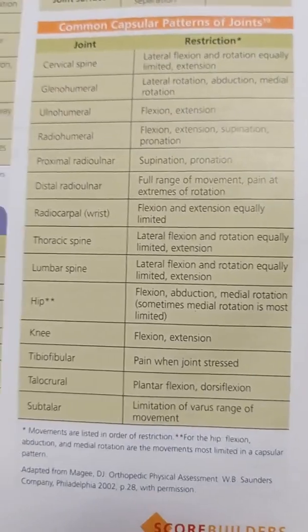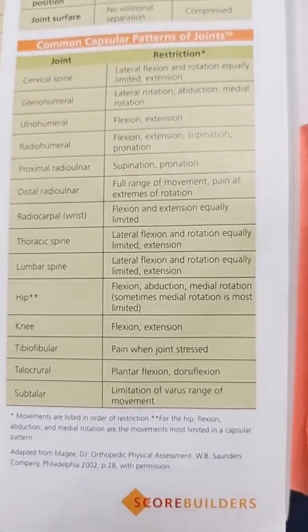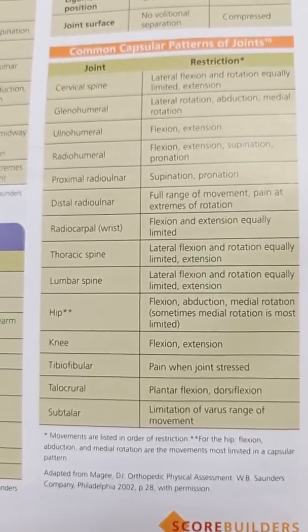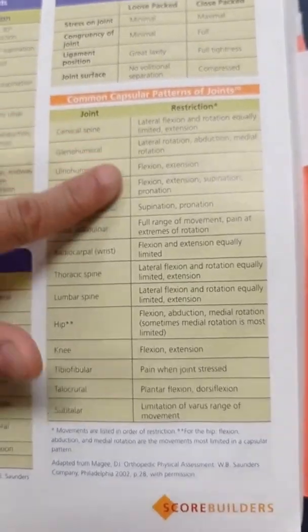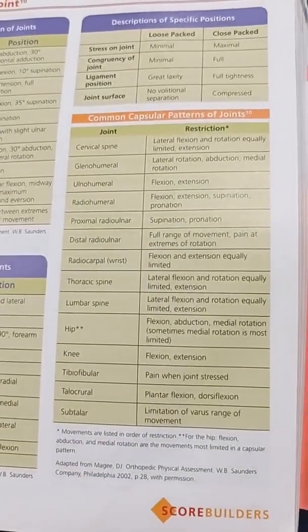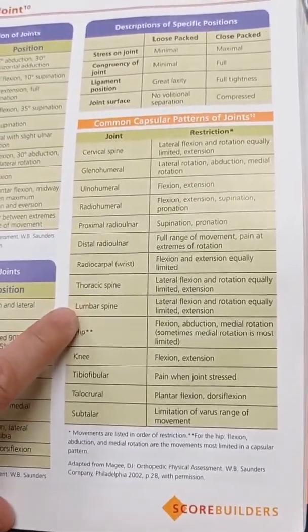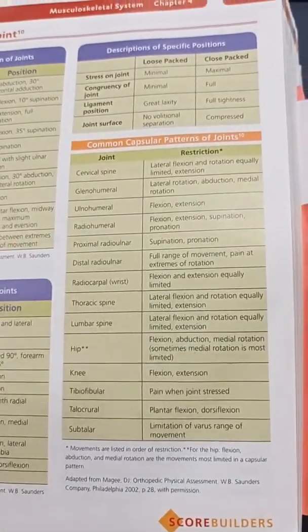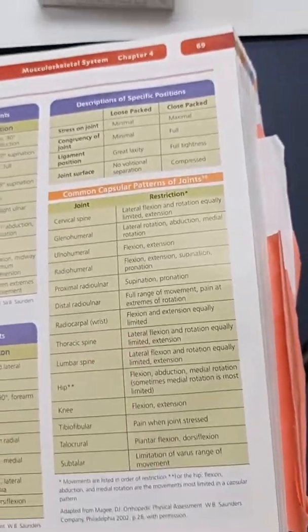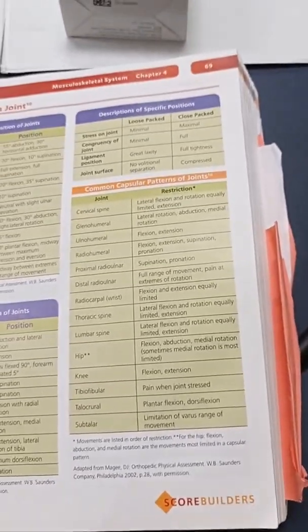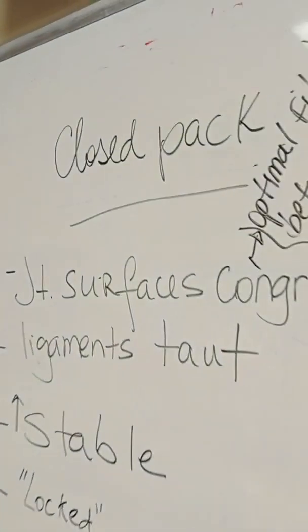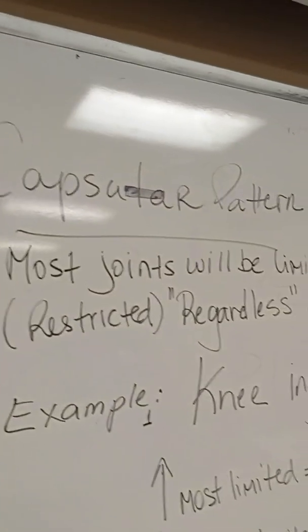This comes directly from your board book, in the musculoskeletal system unit — common capsular patterns of the joints. You'll see the knee and glenohumeral joint examples there. A good one is the lumbar spine: if somebody has a back problem, chances are they'll have a hard time with lateral flexion and rotation, and also with extension.